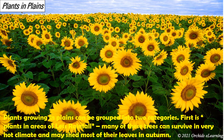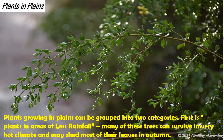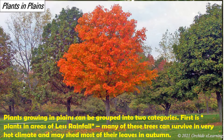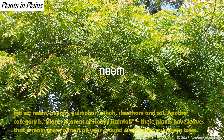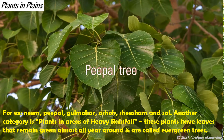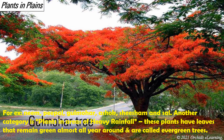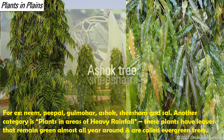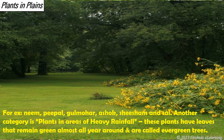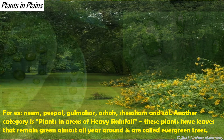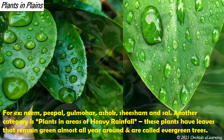Plants in plains: plants growing in plains can be grouped into two categories. First, plants in areas of lesser rainfall — many of these trees can survive in a very hot climate and may shed most of their leaves in autumn. Examples include Gulmohar, Ashok, Shisham, and Sal. Another category is plants in areas of heavy rainfall; these plants have green leaves that remain green almost all year and are called evergreen trees.